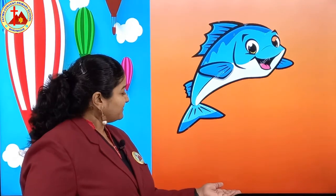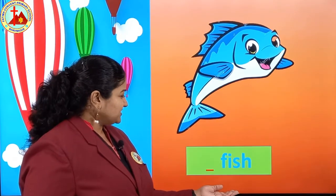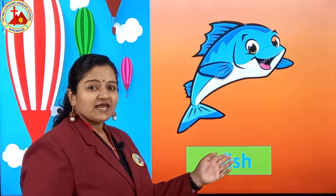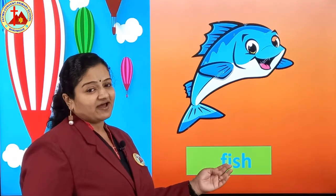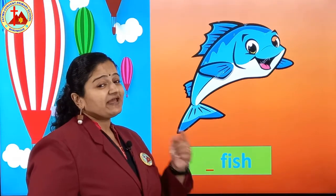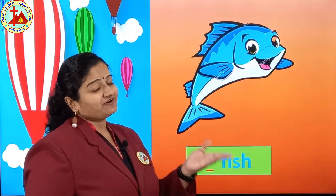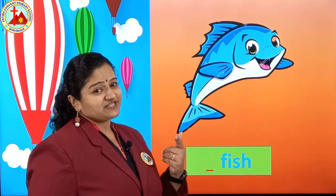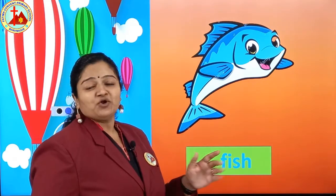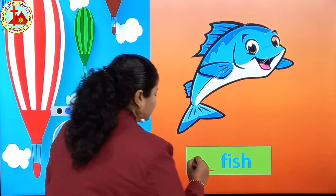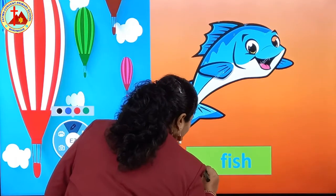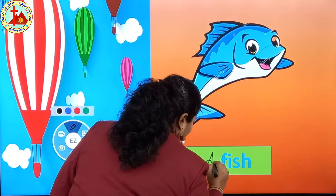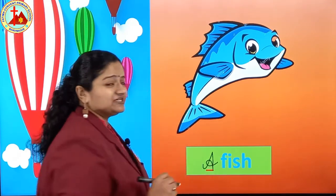Next picture is fish. F, I, S, H — fish. First letter you have to see: F. F is not a vowel. Then write A: a fish.